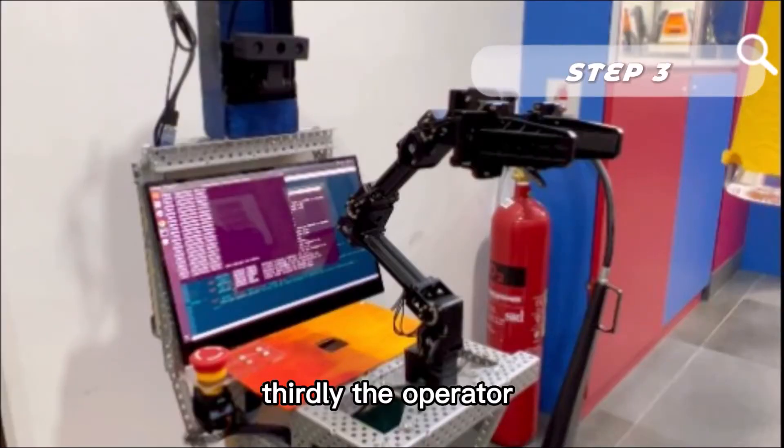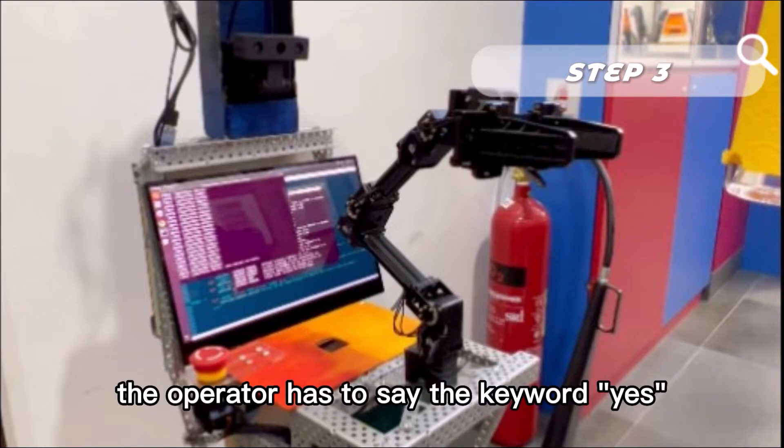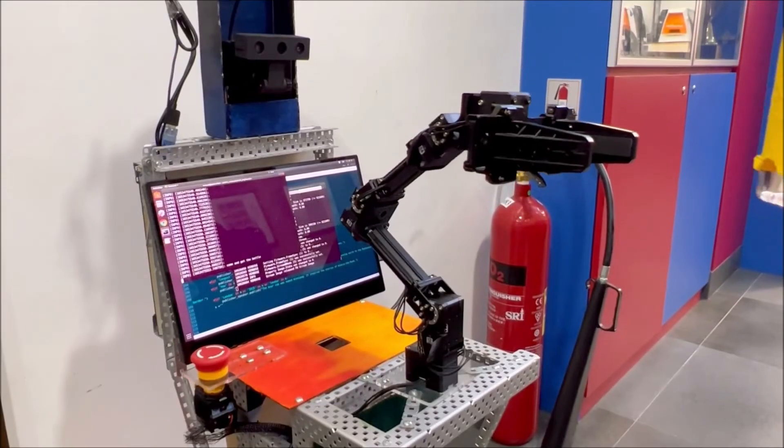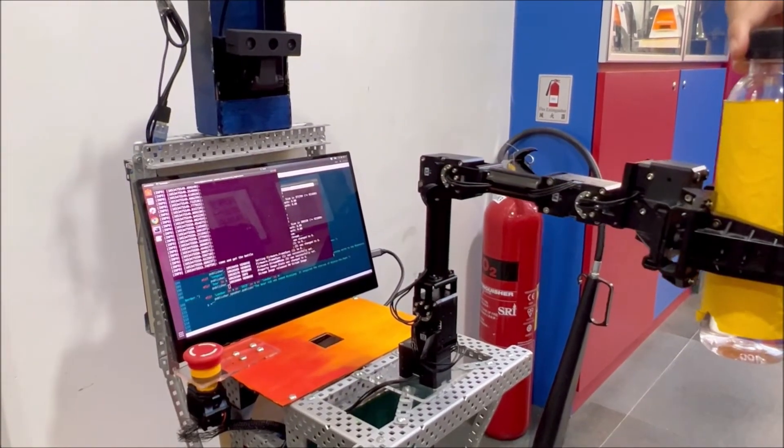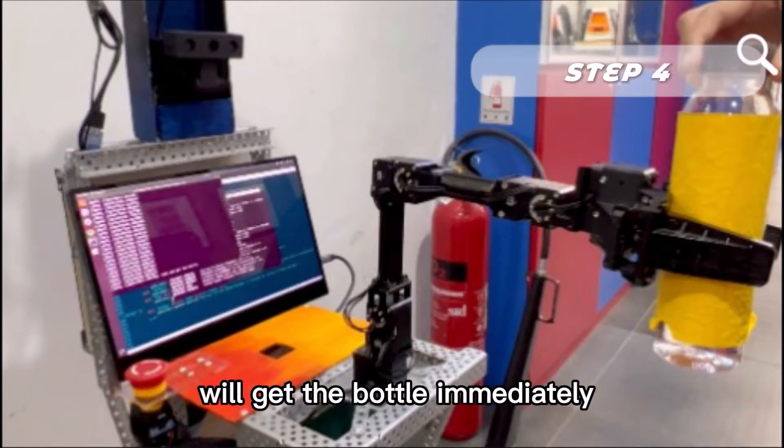Thirdly, the operator will have to confirm the order. To confirm, the operator has to say the keyword yes. After that, the robot will get the bottle immediately.